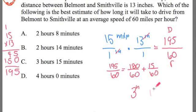So 180 over 60 plus 15 over 60 gets to 195 over 60. Or three hours, 15 minutes. The answer's C.